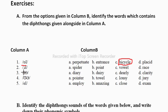The second diphthong is the inverted C and I symbol, which gives us the /ɔɪ/ sound. So where do we have /ɔɪ/? Looking at the options, in 'point' the /ɔɪ/ sound is coming, so point is the answer.